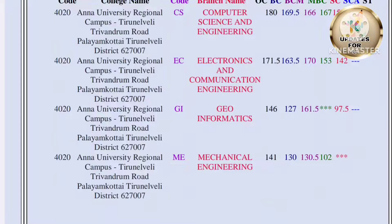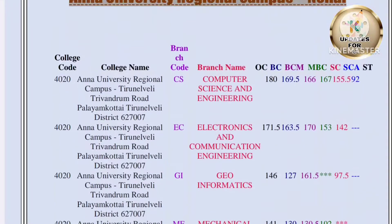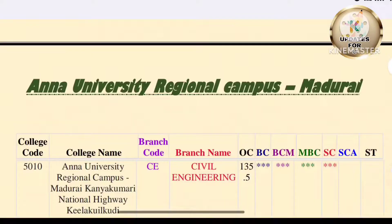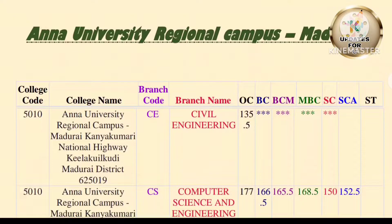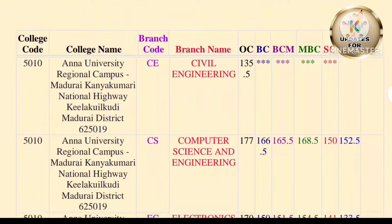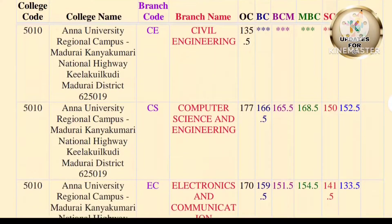Now let's look at the original campus. First, Civil Engineering: OC 135.5. Next, Computer Science Engineering: OC 177, BC 166.5, BCM 165.5, MBC 168.5, SE 150, SE 52.5. This is the average cutoff.